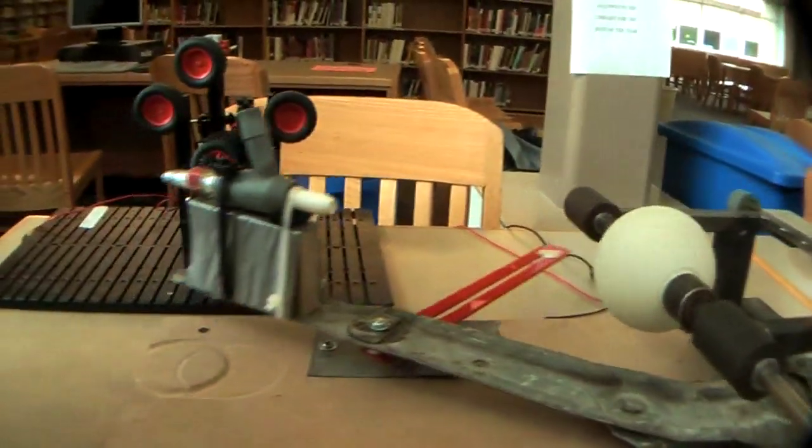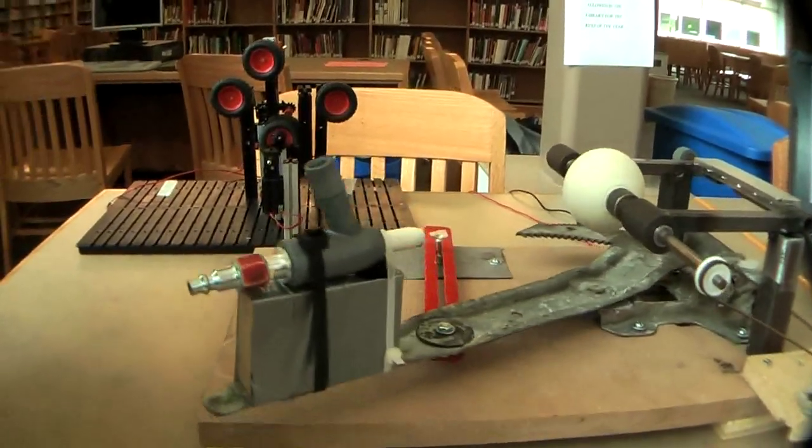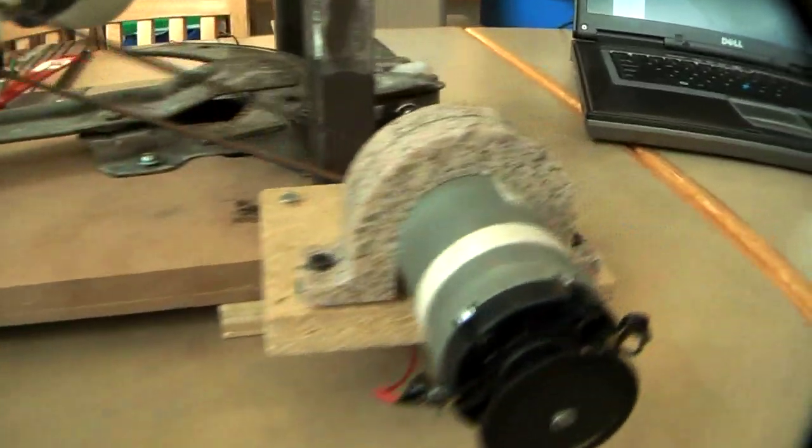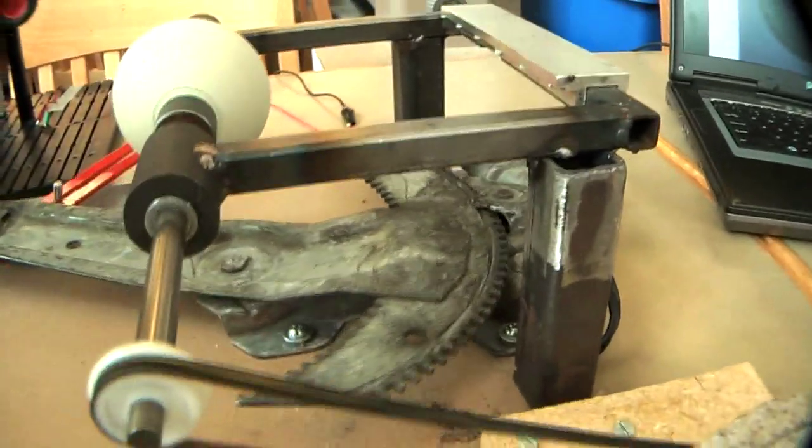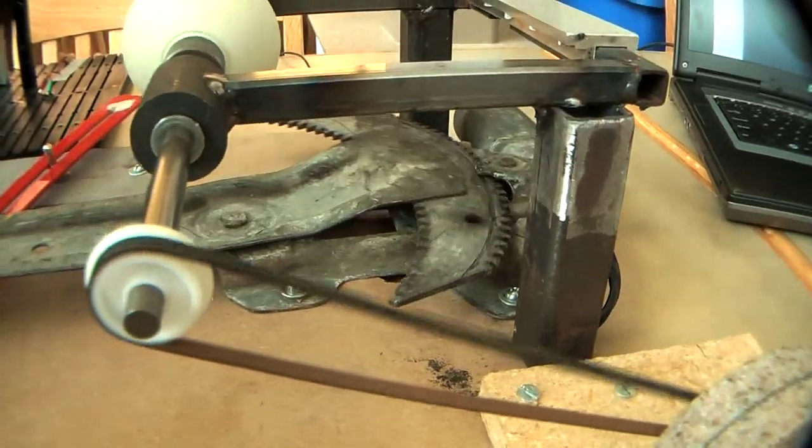This is where the sandblaster head would go. This whole device would be placed inside of a sandblaster and it would cover the whole area of the ball, resurfacing it in just over two minutes.